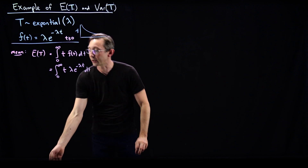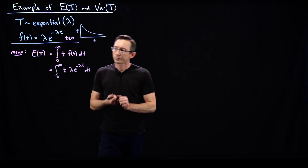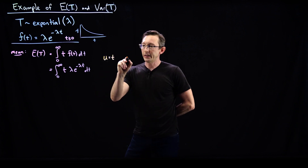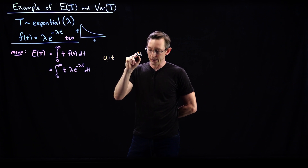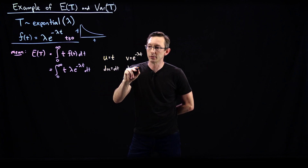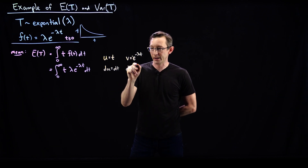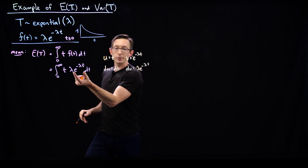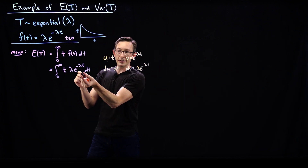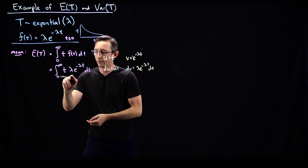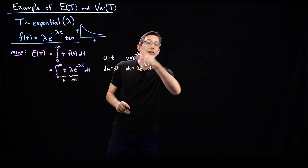This is not trivial to integrate — it's not one you know off the top of your head, but it's pretty easy using integration by parts. We say u equals t and v equals e to the minus lambda t. So du equals dt, and we take v as minus e to the minus lambda t, so dv equals plus lambda e to the minus lambda t. This integral is essentially u dv, where this is u and this is dv.